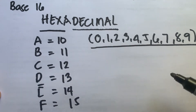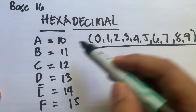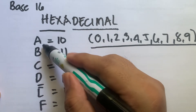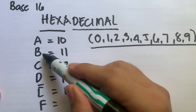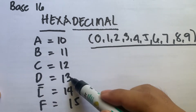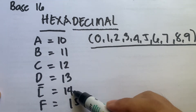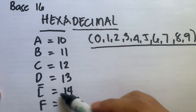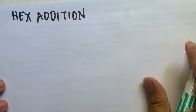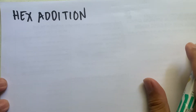After nine, we represent 10 with the letter A, 11 with the letter B, 12 with the letter C, 13 with the letter D, 14 with the letter E, and 15 with the letter F. Let us now proceed with the first operation in hexadecimal, which is hexadecimal addition.